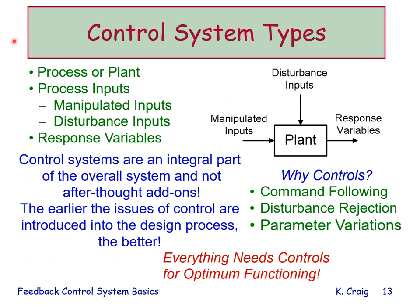Let's formally talk about control system types. The focus of our attention is the plant or process. There are two types of inputs: manipulated inputs, which we have control over, and disturbance inputs, which we have no control over. We want the plant or process to respond in a certain way — these variables are called response variables. Why do we need controls? Command following, disturbance and noise rejection, robustness, insensitivity to parameter variations, and insensitivity to unmodeled high-frequency dynamics. Absolute stability must be guaranteed before considering any of these.